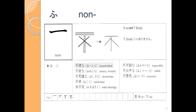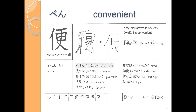Our next kanji is the べん of ふべん. This is also the べん in べんり. For whatever reason, Kanji Look and Learn doesn't have the べん in べんり, but this is the べん from べんり and from ふべん. It looks a little bit like つかう, but be careful — there's one extra stroke that is not in つかう.